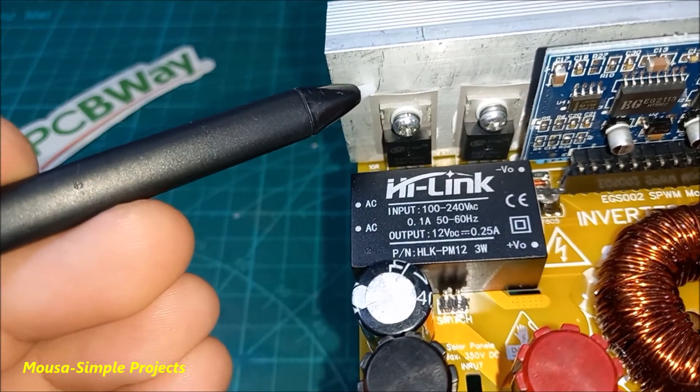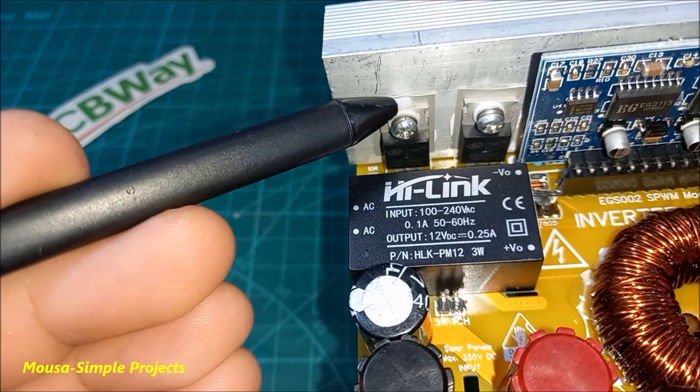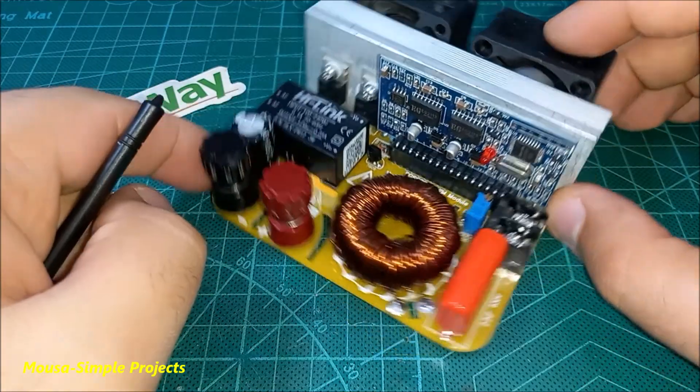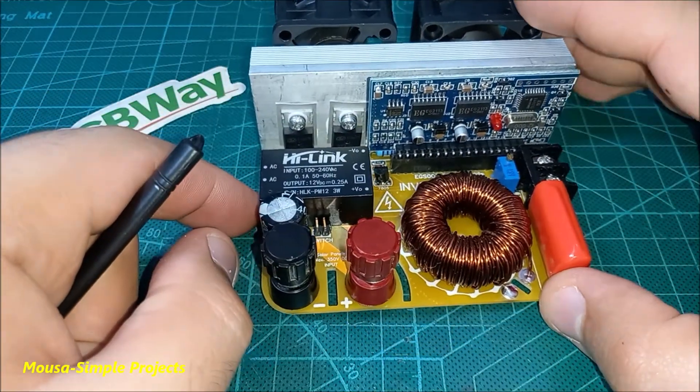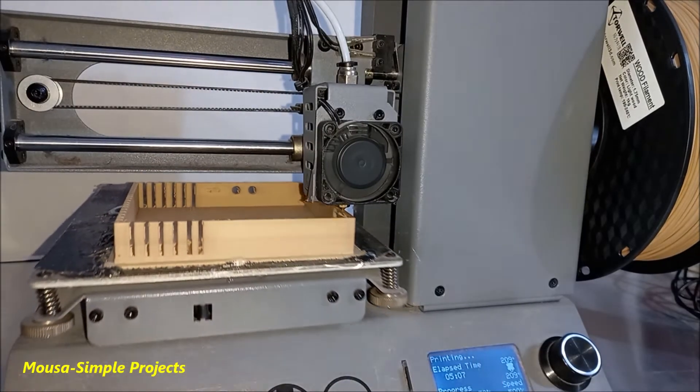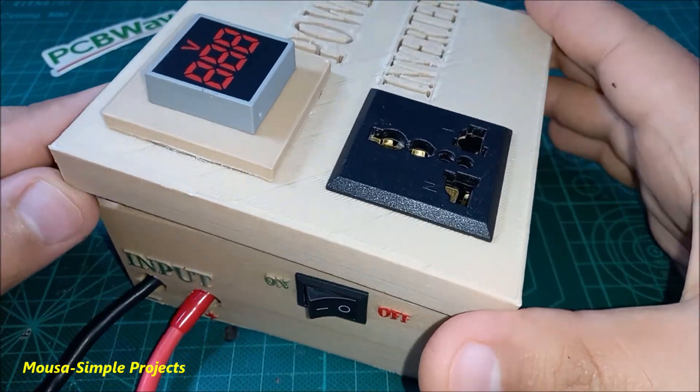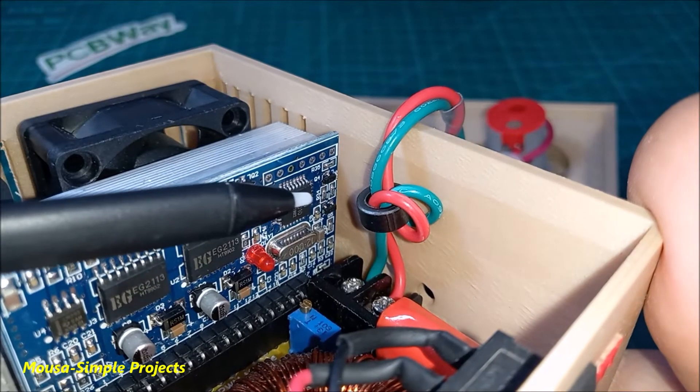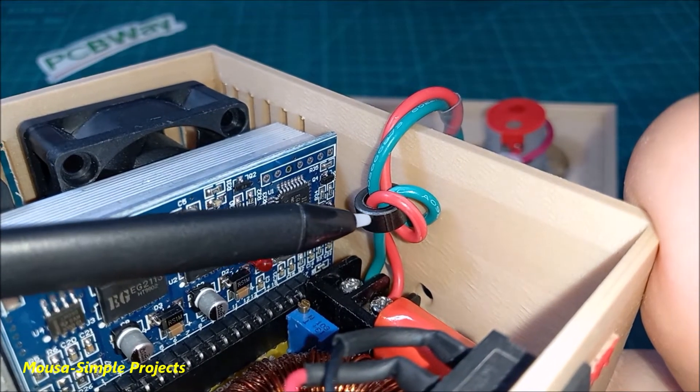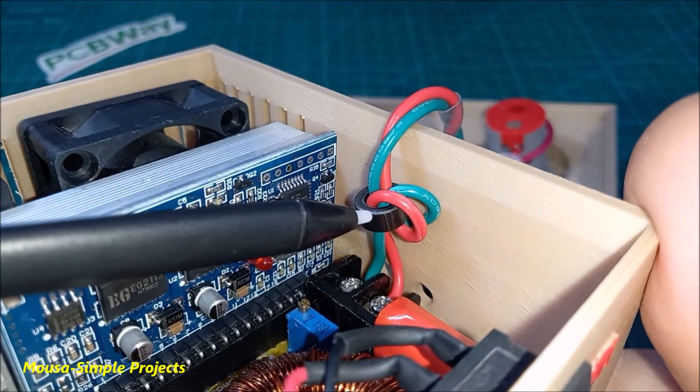You have to use isolation pads between the MOSFETs and the heatsink. Since this circuit works with high voltage, I made a plastic enclosure for it using my 3D printer. I'm using a ferrite ring around the output wire to prevent RF interference.